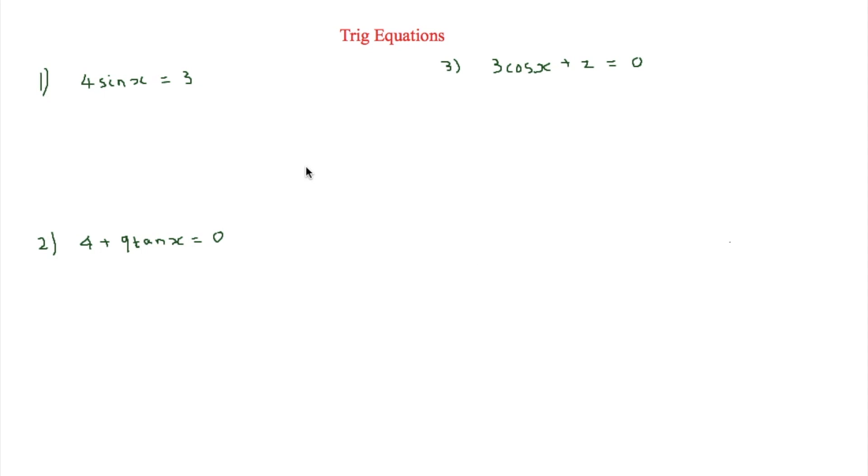The first one here is 4sinx is equal to 3 and our objective is to find what x is. This means that we're going to have to do a little bit of rearranging to get sinx is equal to 3 quarters.